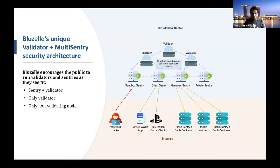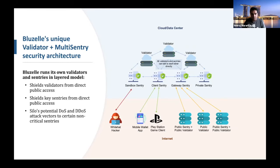As you can see here, our validators run, but they're always protected by sentries. We have four types of sentries, and I'll get into that in a moment. As you can see on the bottom, we allow the public to run validators — that's part of the point. We want members of the public to be able to participate in this network. That's what makes it decentralized. Long-term, BluZell is not intending to run the whole network. The sentries are there to protect the validators, ensure uptime, and protect us from denial-of-service attacks.